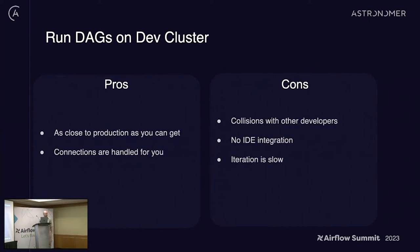The second option is running DAGs on a dev cluster, where you basically have a dev Airflow running in some cloud service, and you can push your DAGs and test them. This is as close to production as you can get — you don't have to worry about connections, everything's handled by your infra team. But you might be colliding with other developers, or you might have to iterate by going through CI/CD every single time you want to push a change, and that's just not sustainable for a developer.